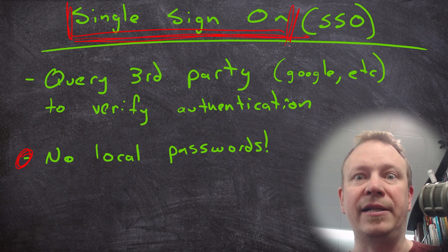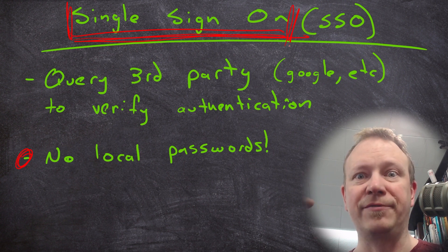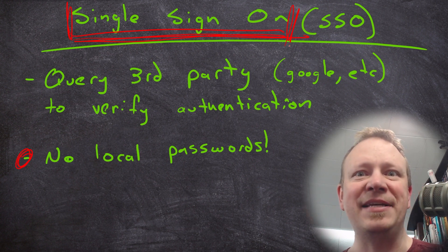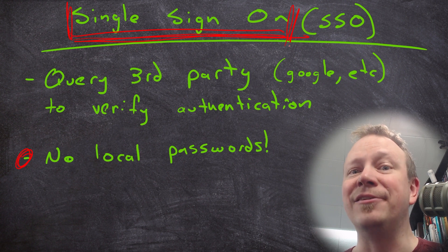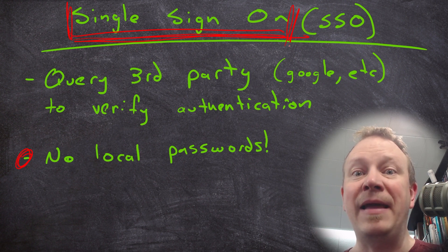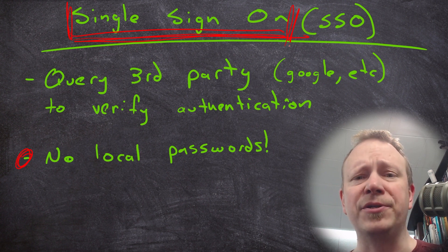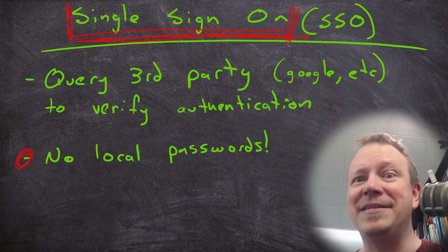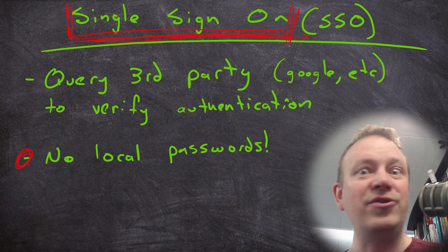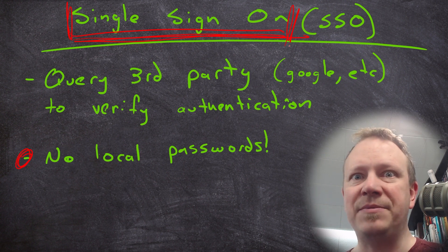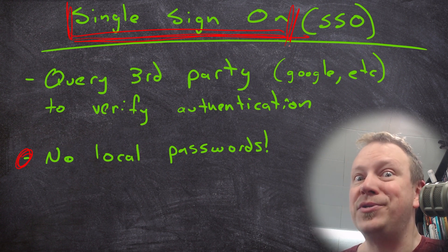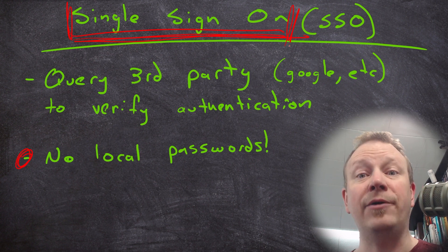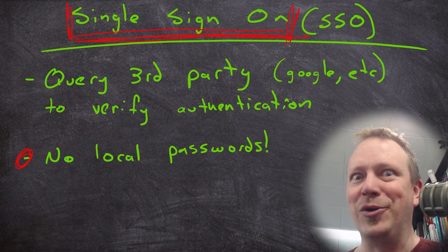You could theoretically host the single sign-on yourself — like one server is the place where everybody authenticates from, maybe it's Active Directory, and every computer and website will authenticate from that one single place. The advantage there is you don't have to have a bunch of usernames and passwords. On a public-facing website, it's nice because as the website host, you don't have to worry about hosting usernames and passwords at all. Because if you don't host usernames and passwords, there's nothing to expose if you have a data breach.